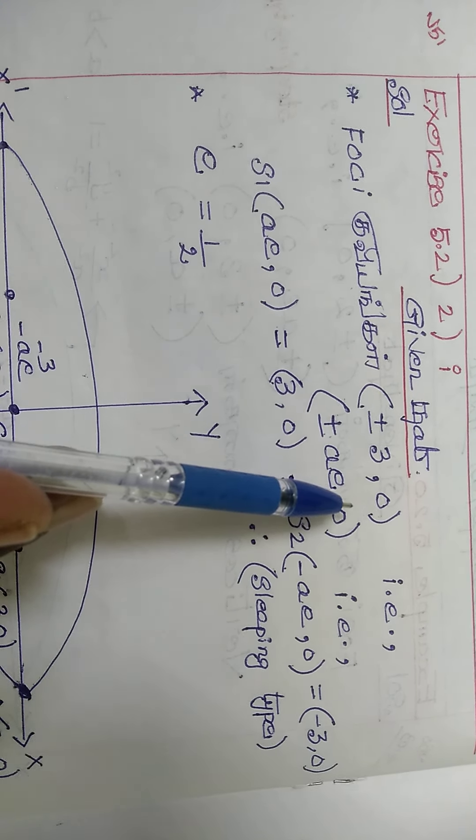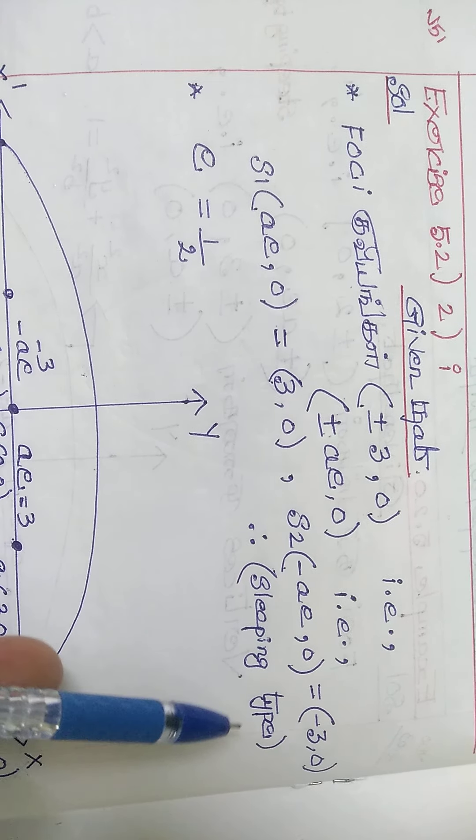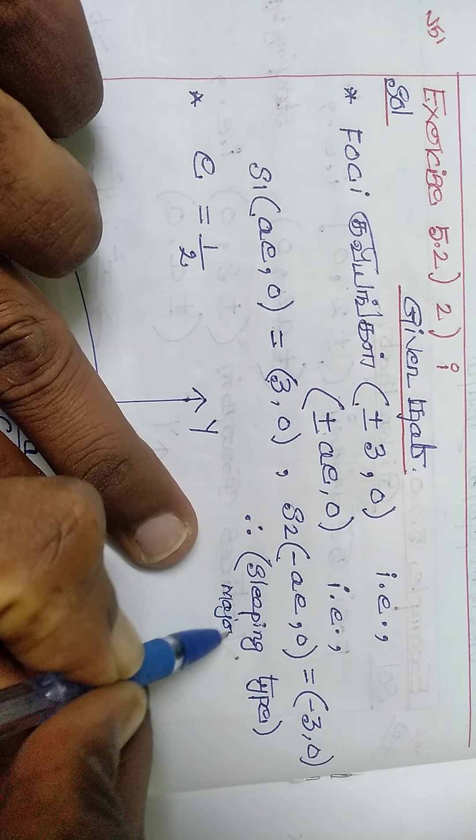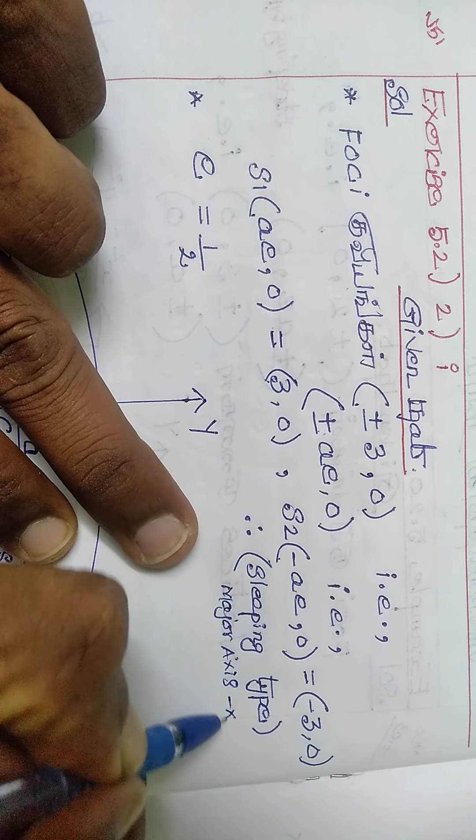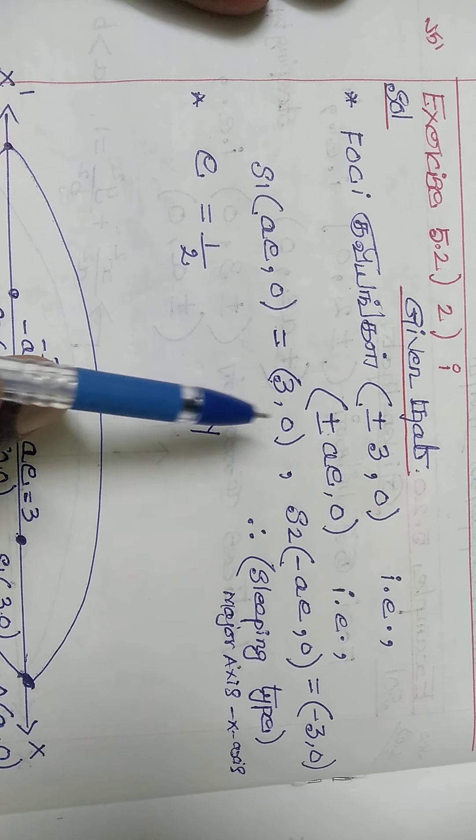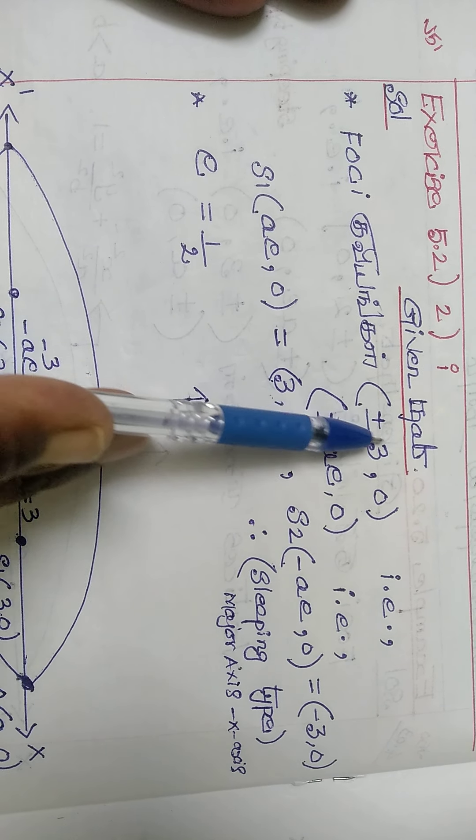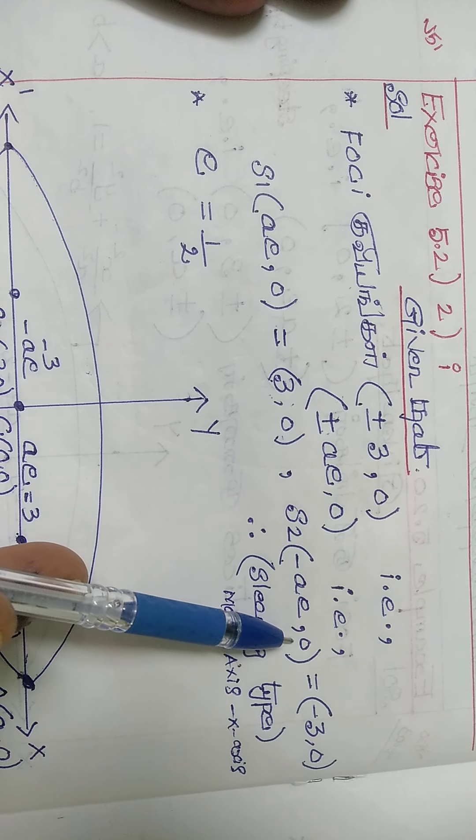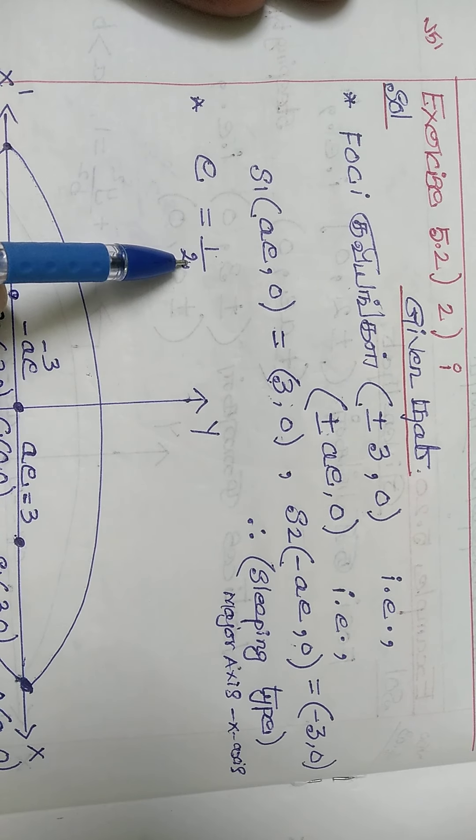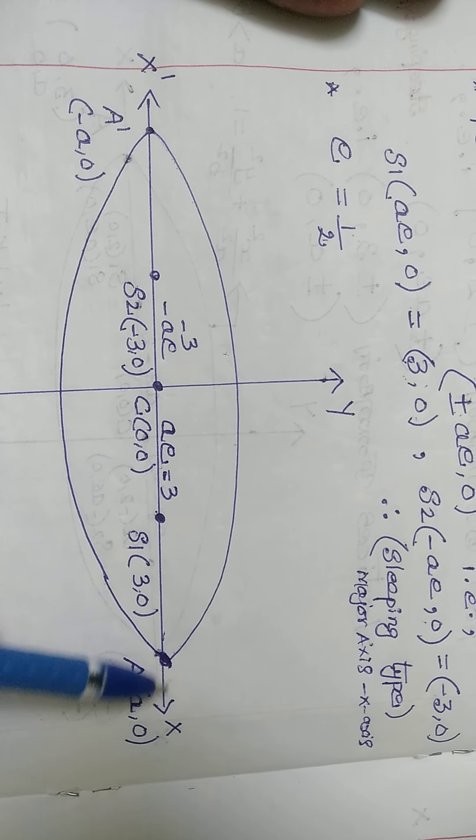First check, major axis is in x-axis. This is sleeping type, which means the major axis is in X axis. The Ae value is in x-axis.